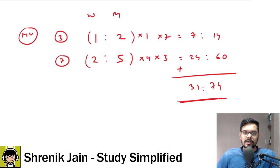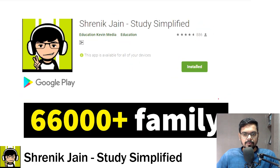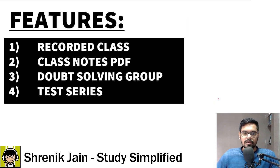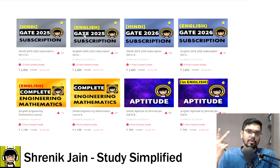I hope you got the idea about the trick. And if you want to learn all the concepts of aptitude, you can download Shrenik Jain's Study Simplified app. Already 66,000 plus family is there. And you can get the recorded classes. If you have doubt, you can ask in the doubt solving group like it was asked by the Ekabhiram student in this aptitude course group. You will get the notes, so no need to make the notes. You will get the test series.